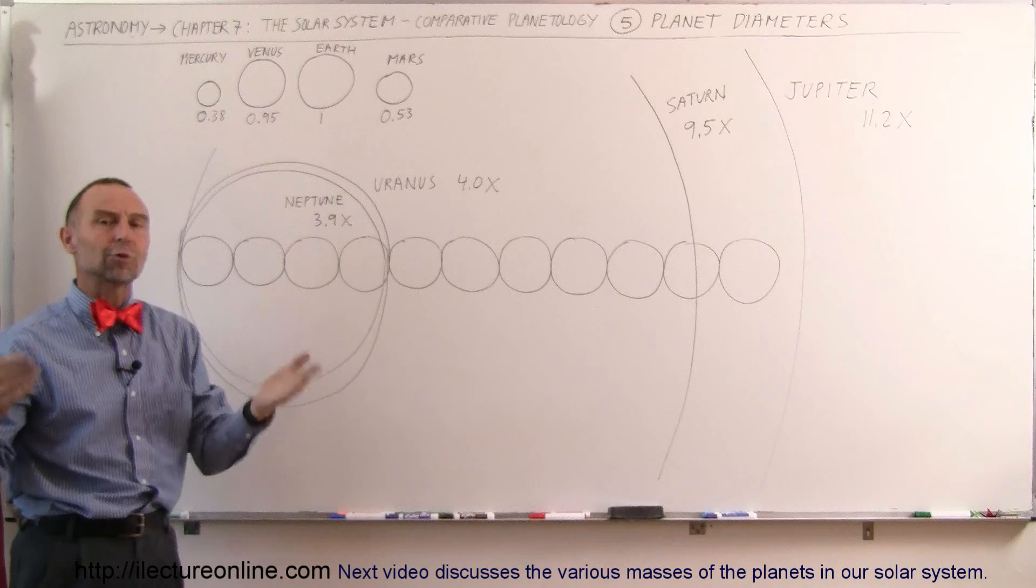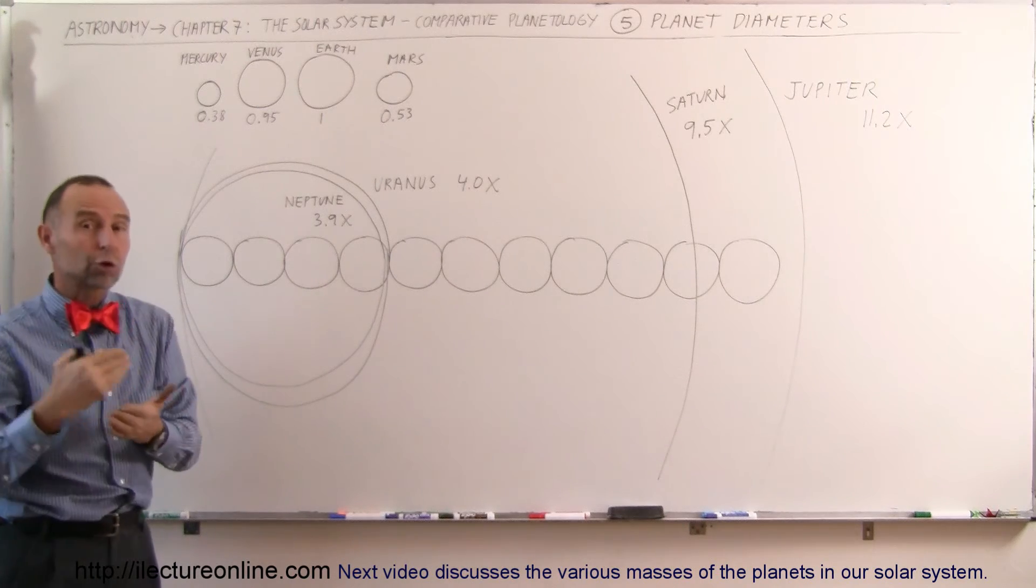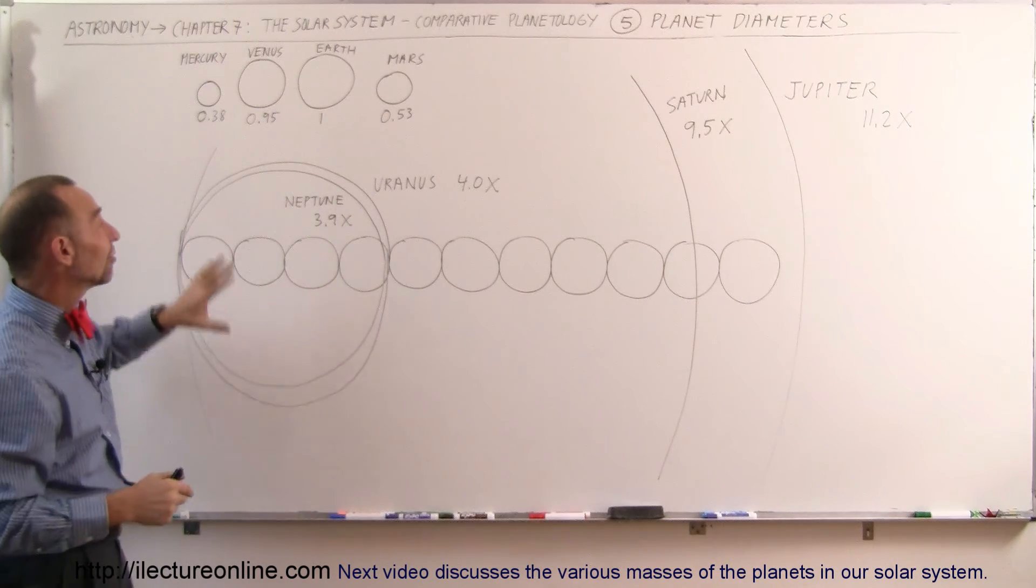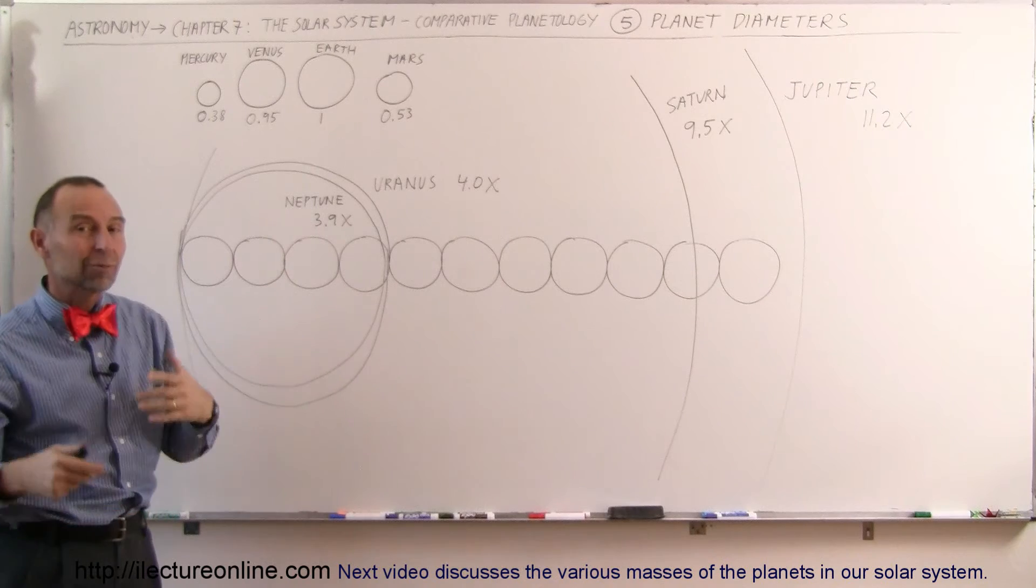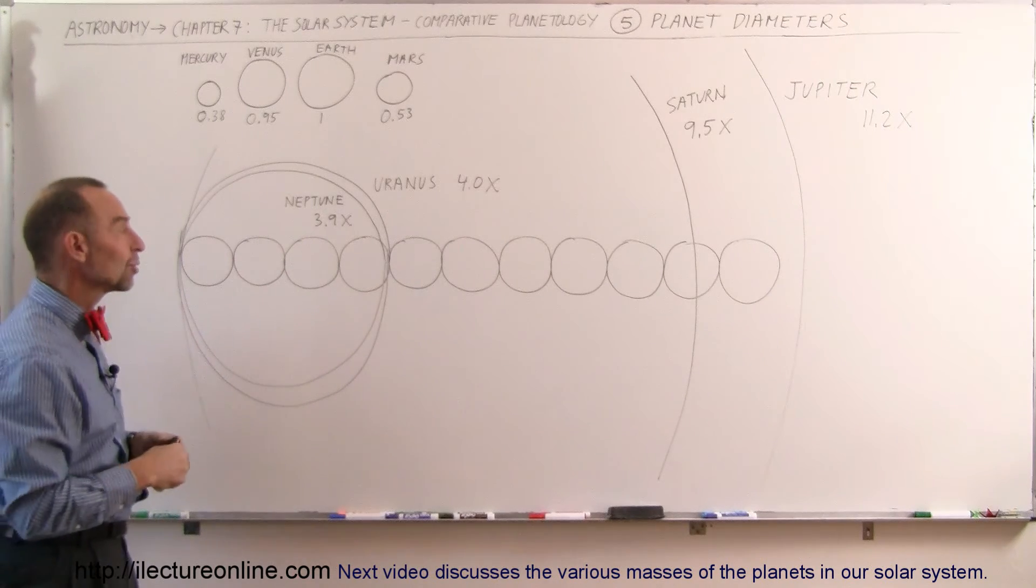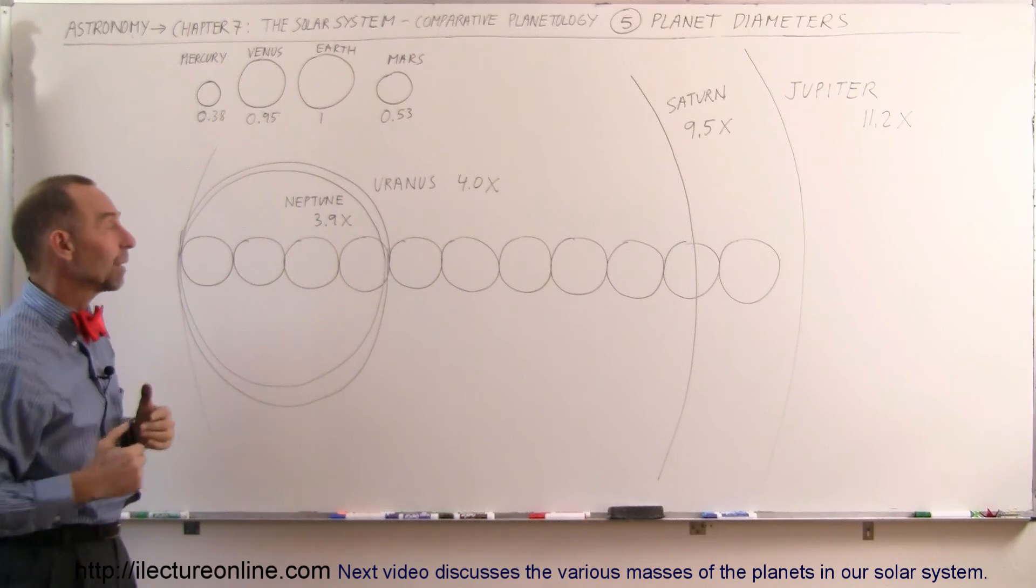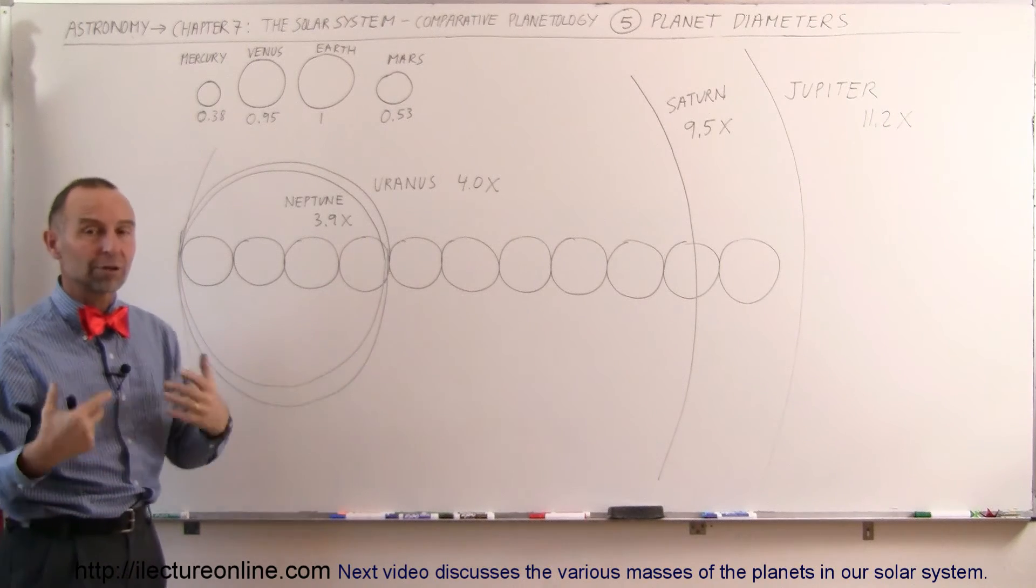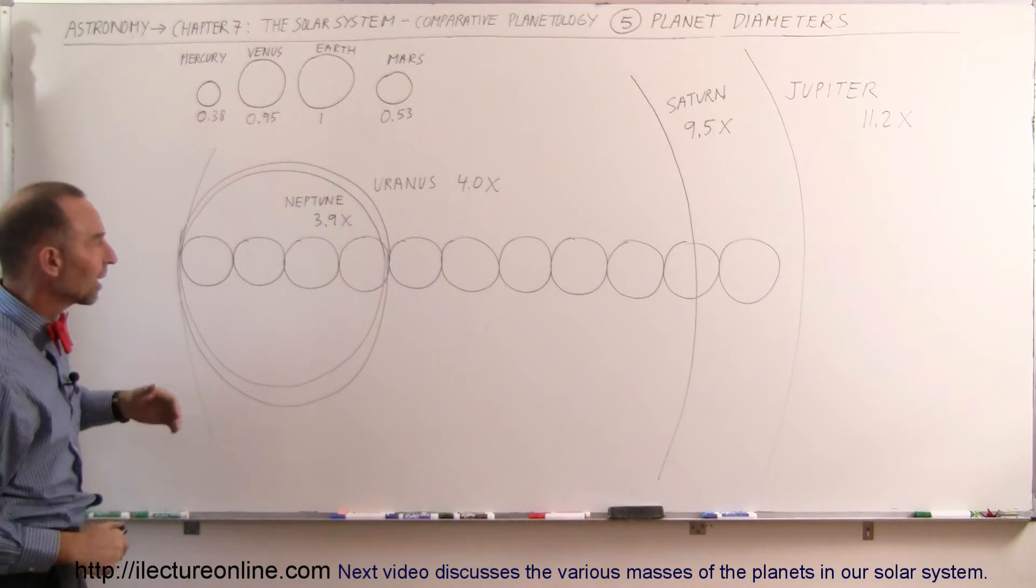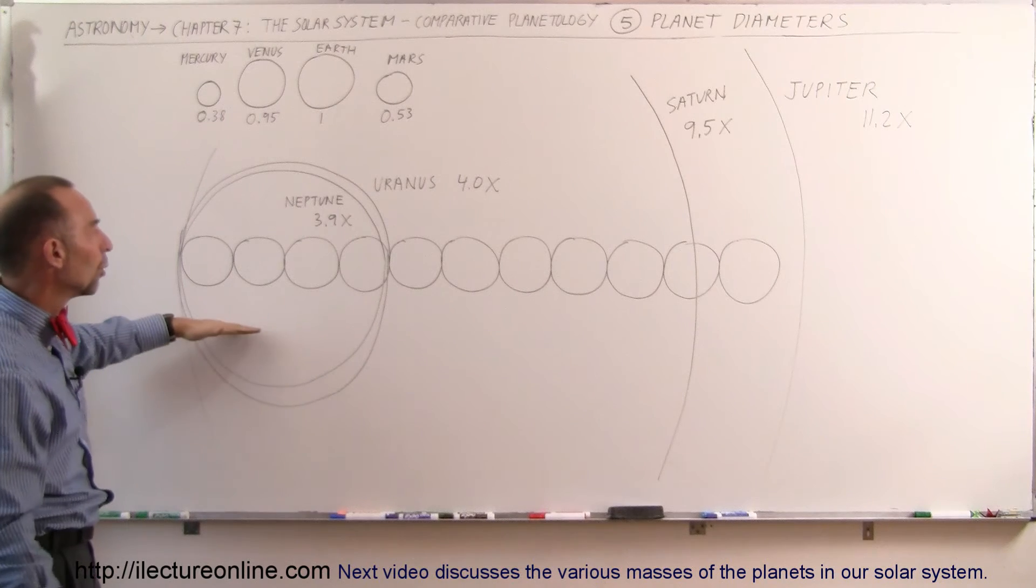So if the diameter is about four times the diameter of the Earth, 4 cubed is 64. That means the volume of these two planets is about 64 times the volume of the Earth. So they are very large planets as well. And all four of these planets, of course, are predominantly made out of gases, different kinds of gases, and we'll get into that a little bit more.